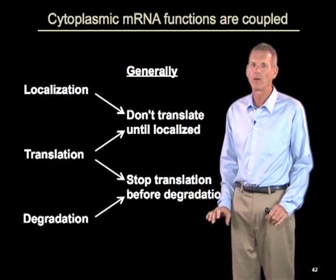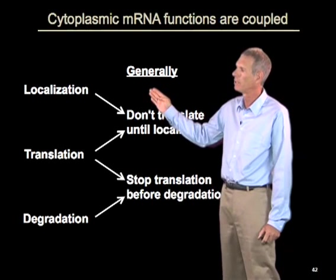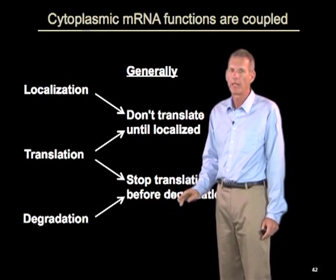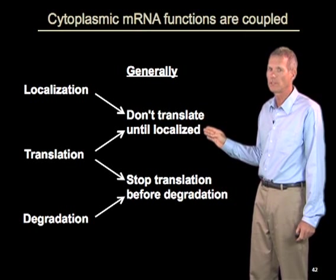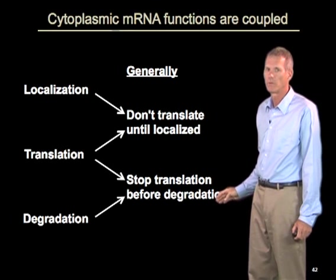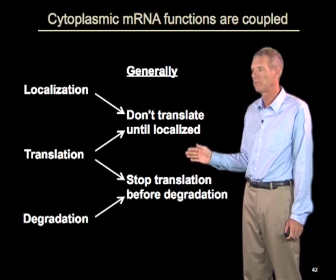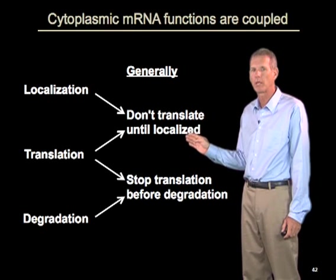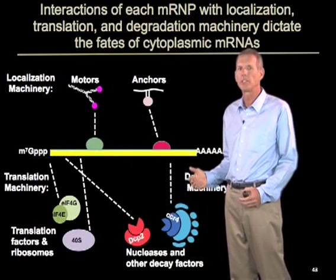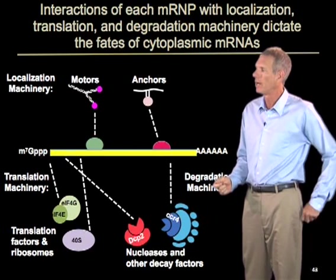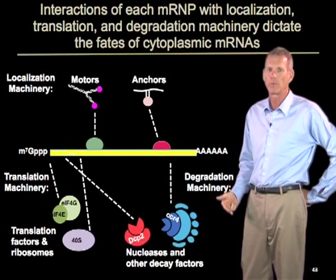To step back: the three key areas of cytoplasmic mRNA function are localization, translation, and degradation. These three processes are coupled with the general rules that you don't translate until you are localized, and you stop translation before you degrade. They may be coupled even more mechanistically because a similar group of proteins — involved in translational repression and decapping — couples these processes. An important question then is how the fates of different mRNAs are controlled to give different types of localization, different translation rates, and different rates of degradation.